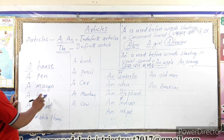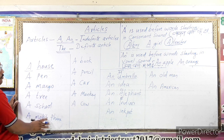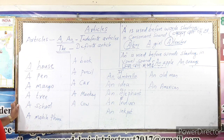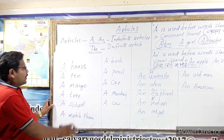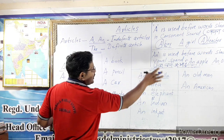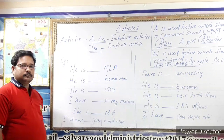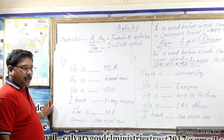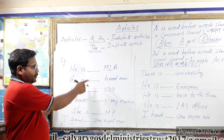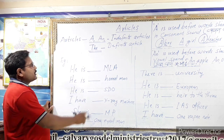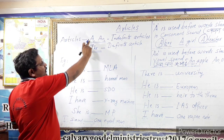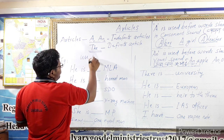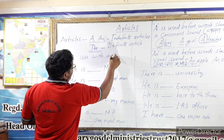See the difference: this is the consonant sound, and this is the vowel sound. Look at the board again — you can write also. This is the consonant sound and this is the vowel sound. Now I wrote some sentences on the board. Can you tell me which article — A or An — comes here?